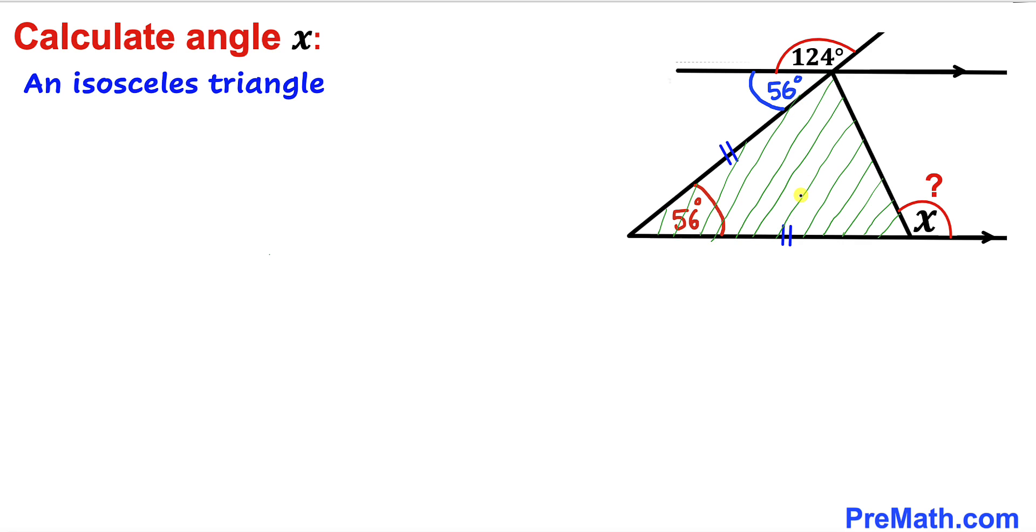Here's our next step. Let's focus on this triangle. We know this is an isosceles triangle since this side length equals this side length. Therefore, this angle has to equal this angle.